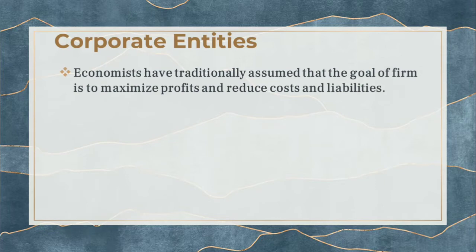Economists have traditionally assumed that the goal of the firm is to maximize profit and reduce cost and liability. Theoretically, the goal is to maximize and utilize profits — what companies call cost-cutting — and maximize earnings.